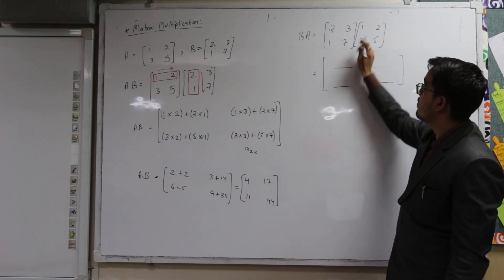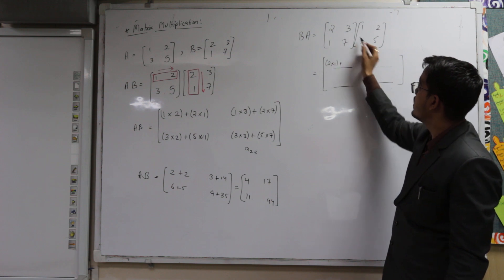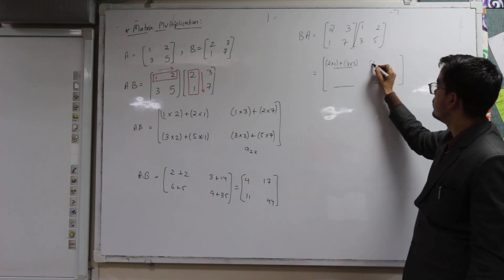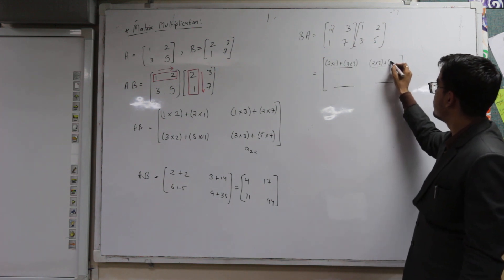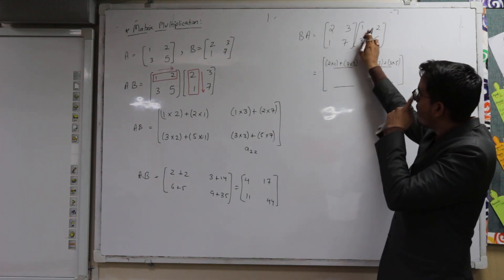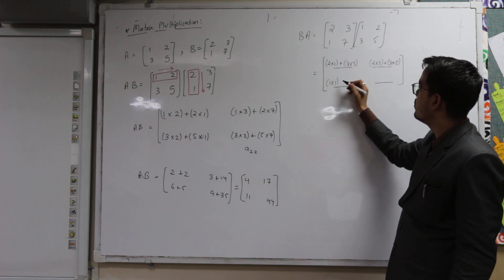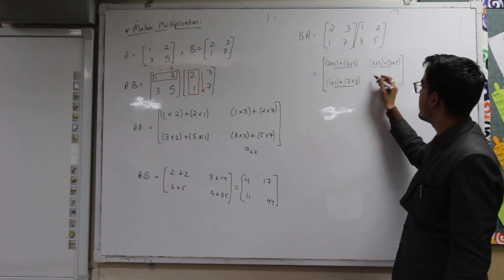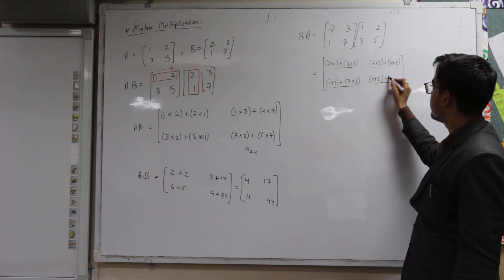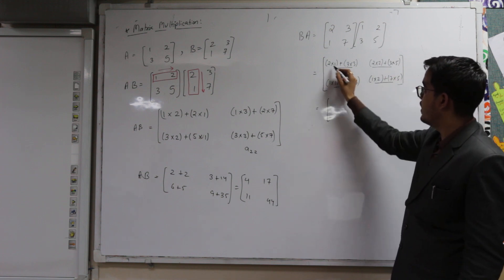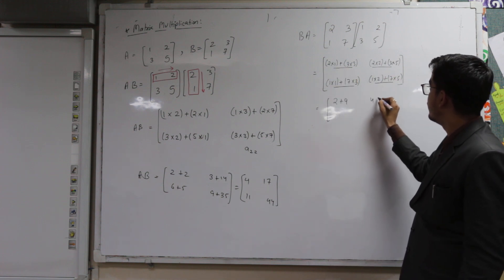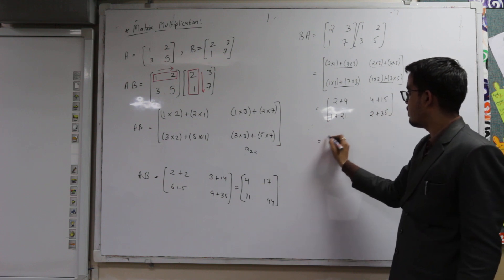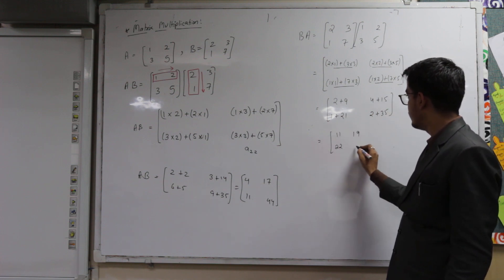So: 2 multiplied by 1 plus 3 multiplied by 3, then moving to the second column, 2 multiplied by 2 plus 3 multiplied by 5. For the second row: 1 multiplied by 1 plus 7 multiplied by 3, then 1 multiplied by 2 and 7 multiplied by 5. The answers are 2 plus 9, 4 plus 15, 1 plus 21, and 2 plus 35. So the final BA matrix is 11, 19, 22, and 37.